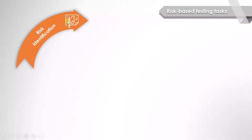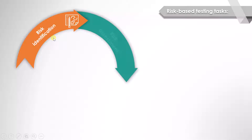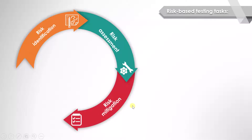Risk-based testing tasks are implemented by the technical test analyst. The first step he will do is risk identification — he will try to identify the maximum risks possible. Once the risk is identified, the technical test analyst will analyze them, and that stage is called risk assessment. Then he will try to provide a solution, and that stage is called risk mitigation.